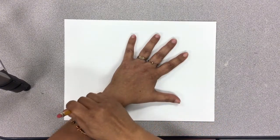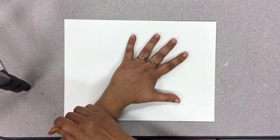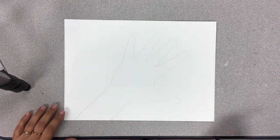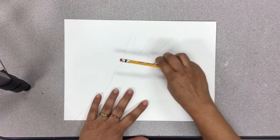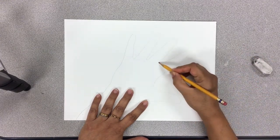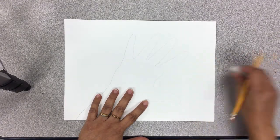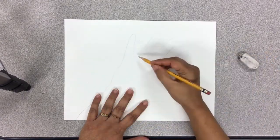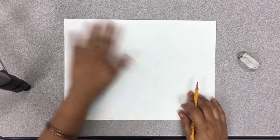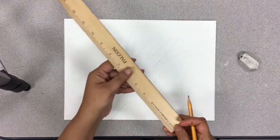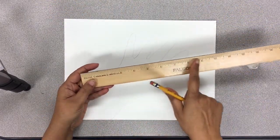After you've traced your hand with pencil, please do not outline it with anything else, because the optical illusion will only be created if you have your lines very light. Now we are going to create some lines.